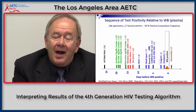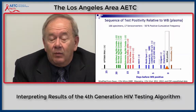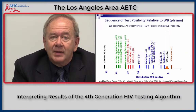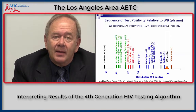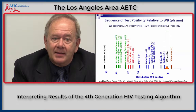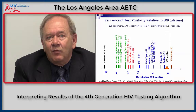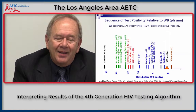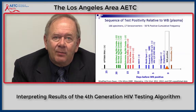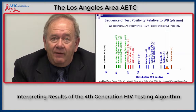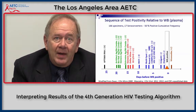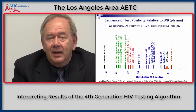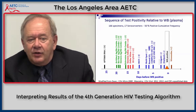Finally, the Aptima RNA assay detects infection when RNA first appears, at about 26 days before the time that the Western blot first turns positive. This gives some indication of the window periods with these different assays, and is the reason the fourth-generation assay is important — detecting infection nearly three weeks before the Western blot would be positive in an individual with HIV infection.